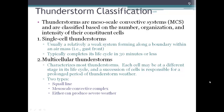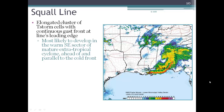There are a couple of types of multicellular thunderstorms. Starting with the squall line — a squall line is an elongated cluster of thunderstorm cells with a continuous gust front at the leading edge, typically of a cold front. Here's a radar image that shows a squall line, and you can see the intense line of thunderstorm development.